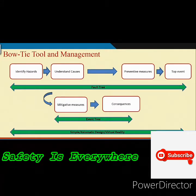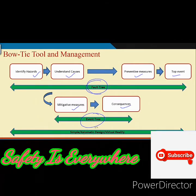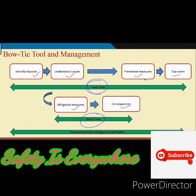The bow tie tool follows a sequence: from the hazard, then causes, then preventive measures, then top event, then mitigating measures, then consequence. We are referencing the top event with probability when talking about the fault tree, and when talking about consequences we are bringing in the event tree. So fault tree and event tree are linked. When all of this is combined, it ultimately leads to identifying hazards, the safety-critical factors, the factors contributing to hazard occurrence, the required preventive and mitigating measures, and finally the risk control system — how it will be made operational, monitored, and controlled — all put together under bow tie tool and management.